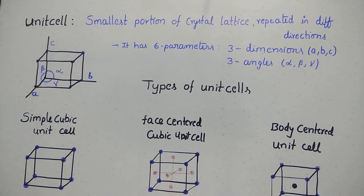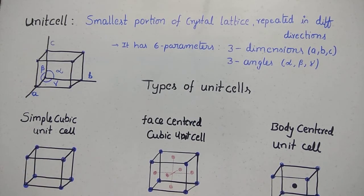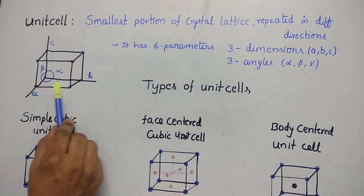Lattice points are connected by straight lines, giving you the three-dimensional structure of the unit cell. A unit cell is a small portion of this arrangement. First of all, what is a unit cell? A unit cell is the smallest portion of a crystal lattice which repeats itself in different directions.